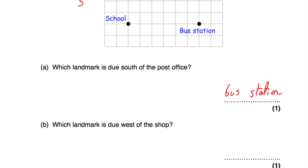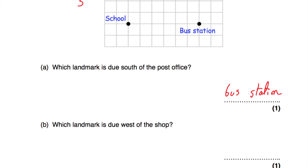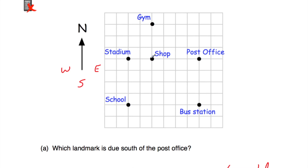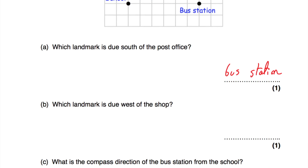Part B says which landmark is due west of the shop? So if we go to the shop, we're looking for the landmark that is west — going in this direction — and that means that would be the stadium. The stadium is due west of the shop.